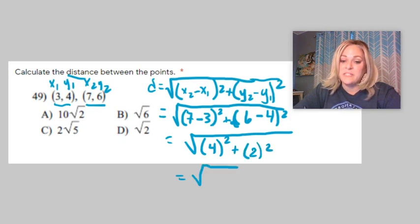And you just need to keep going until you can simplify this. I have 16 plus 4. And when I add those together, I actually get the square root of 20.